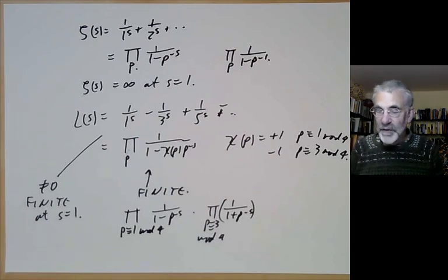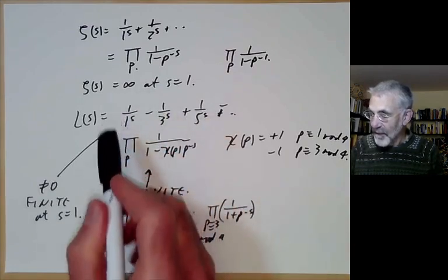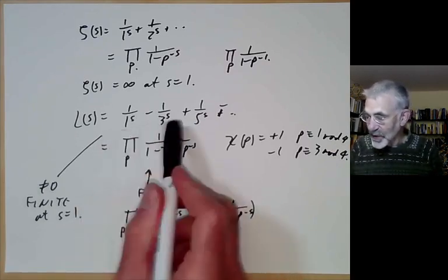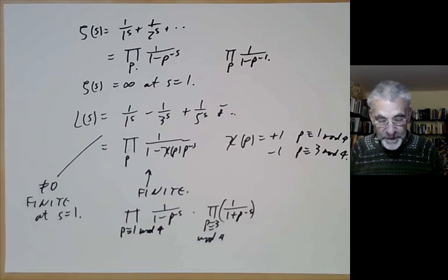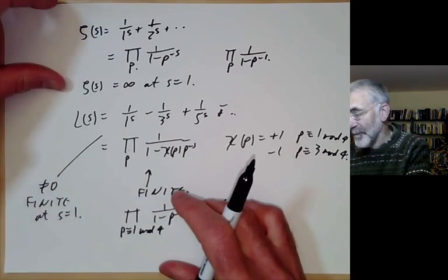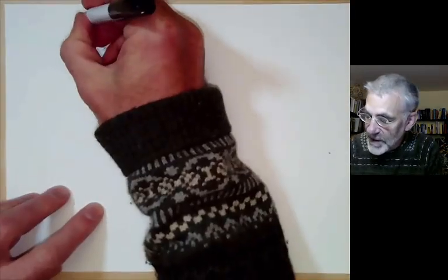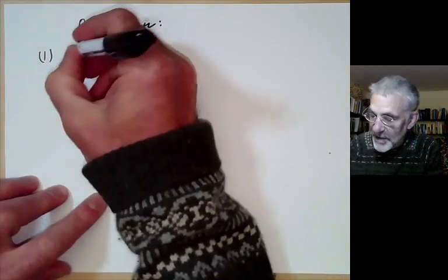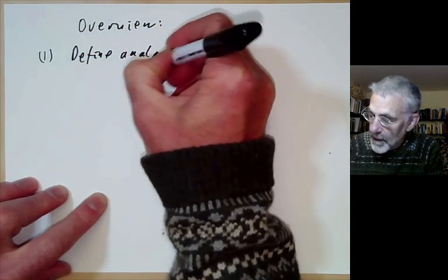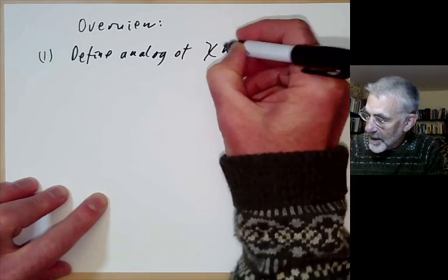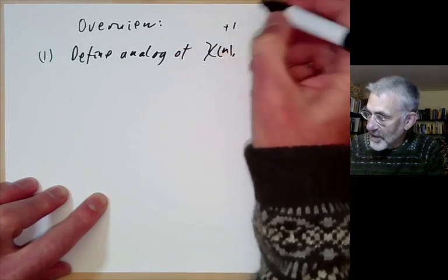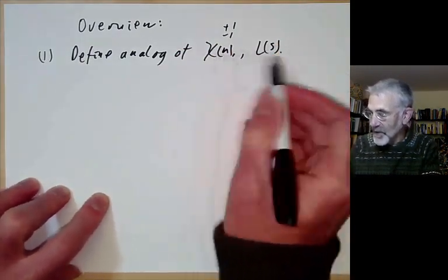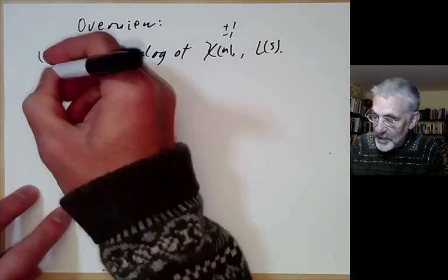Dirichlet's proof basically consists of taking this idea for primes mod 4 and generalising it to arbitrary congruences. There are essentially three steps. The first step is to define analogues of chi(n) — the one that was plus 1 for 1 mod 4 and minus 1 for 3 mod 4 — and define the analogue of L(s) for other moduli.